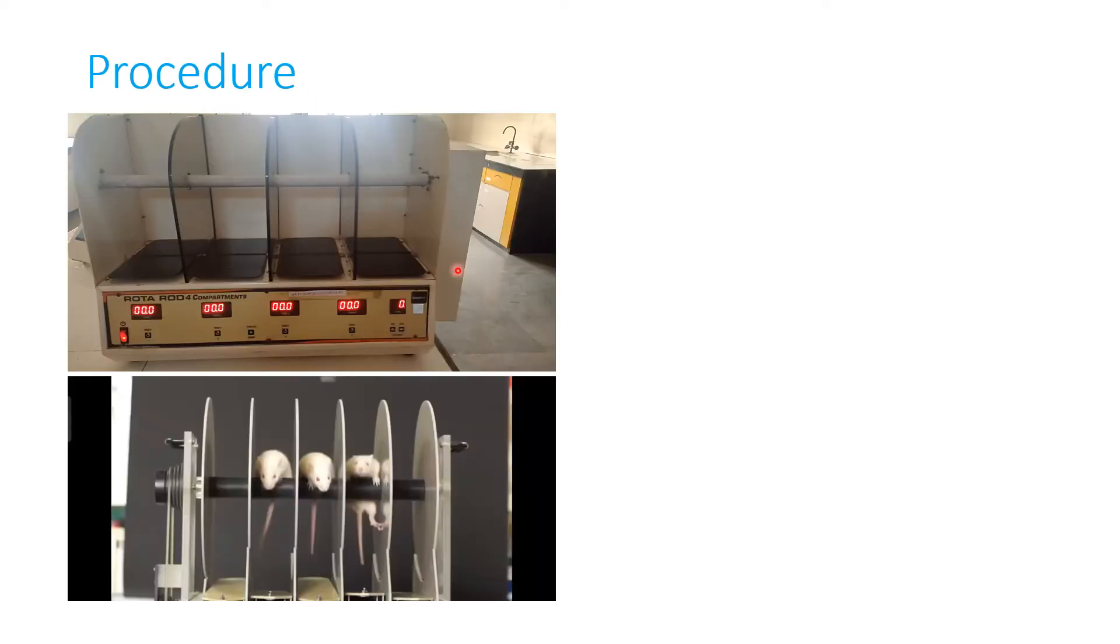Procedure: weigh the animals and number them. Turn on the rota rod and select the appropriate speed, 20 to 25 rpm is ideal. You can see here this is the rota rod apparatus. This apparatus consists of an aluminum structure covered in PVC plates. This particular apparatus has different partitions.